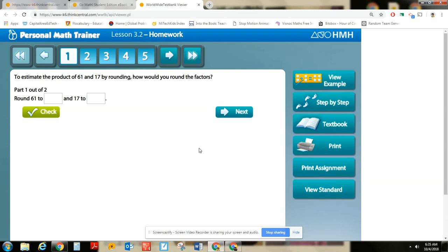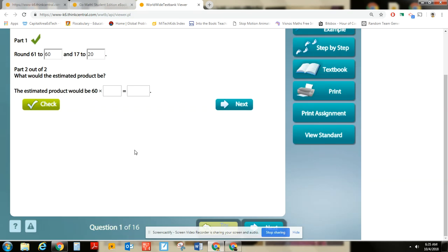So estimate, round what it's close to. Right here, it says round 61 to what's either going to be 60 or 70. It's definitely closer to 60. And 17 is closer to 10 or is it closer to 20? Well, it's closer to 20. We can check. So it would be 60 times 20, and this is where it kind of gets a little goofy.